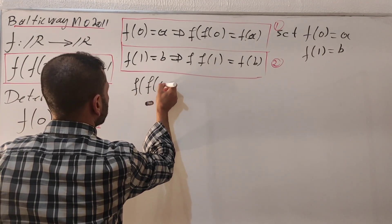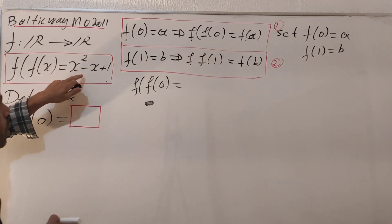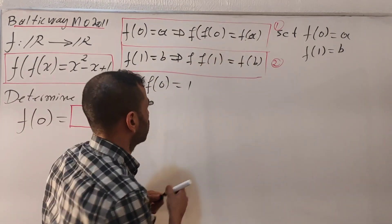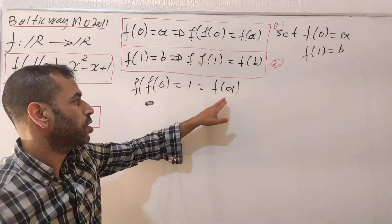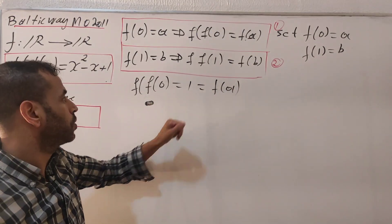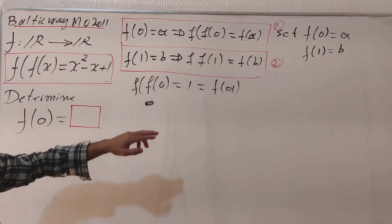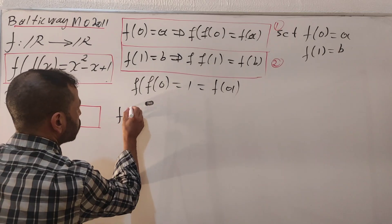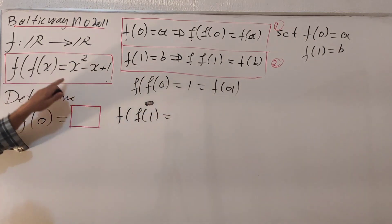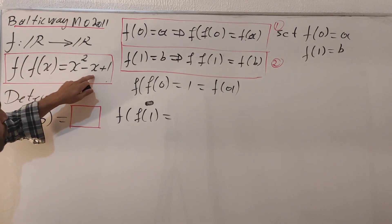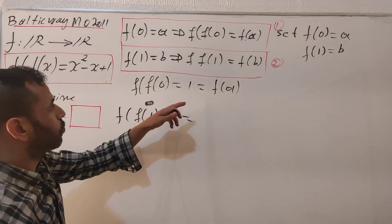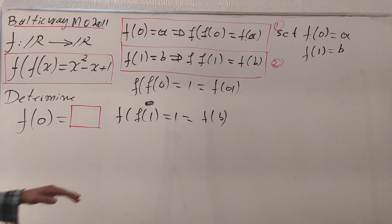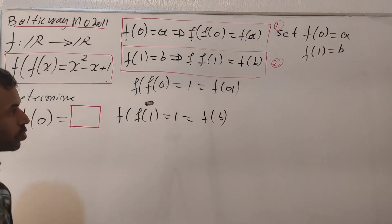We know f of f of zero by plugging x with zero into the original function, which gives number one. So f of a equals one. Similarly, f of f of one by plugging x with one gives one minus one plus one, which equals one. So f of f of one equals f of b equals one.